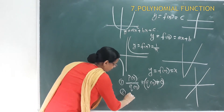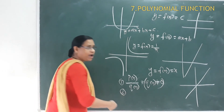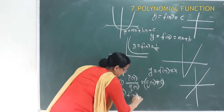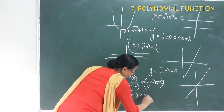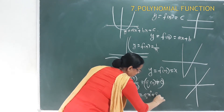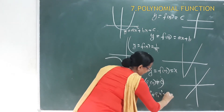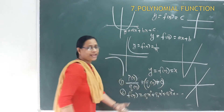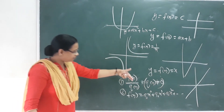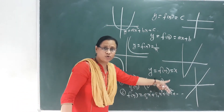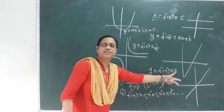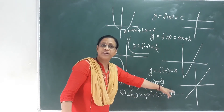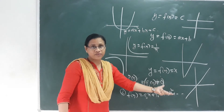The polynomial function is the real function f from R to R: y = f(x) = a₀x⁰ + a₁x¹ + a₂x² + ... + aₙxⁿ, where a₀, a₁, a₂, a₃, etc. are real numbers, and aₙ is not equal to 0.